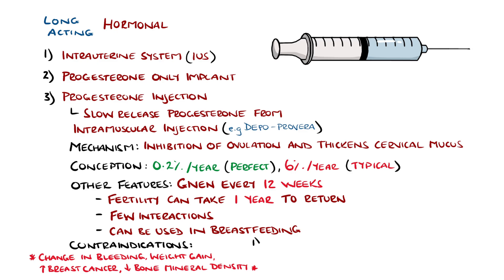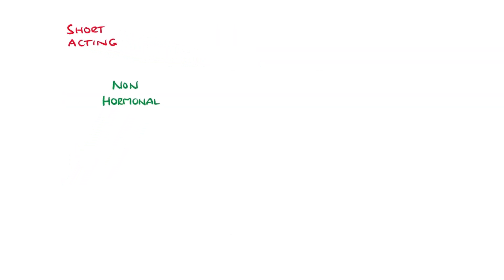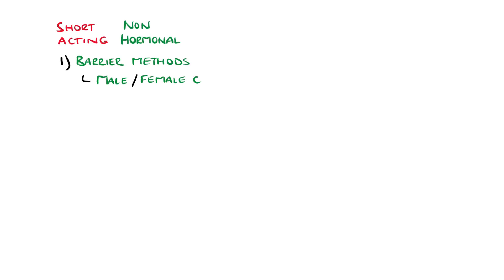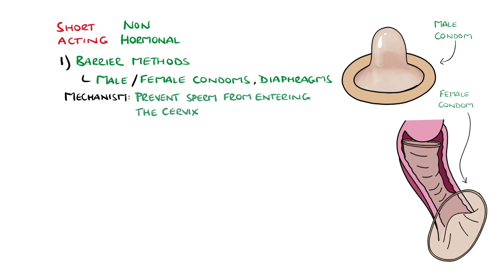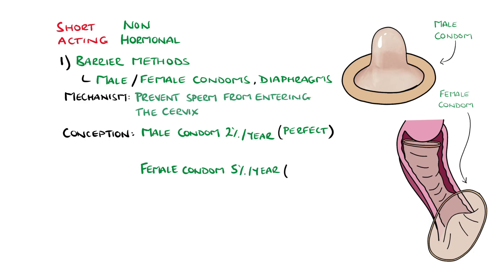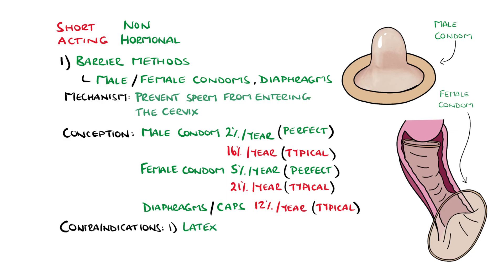The main contraindications for the progesterone injection are breast cancer, severe arterial disease or risk factors, pregnancy, and those who wish to be fertile in the near future. Looking at short-acting non-hormonal options, we have barrier methods such as male and female condoms, diaphragms and cervical caps, which work by preventing sperm from entering the cervix and thus preventing fertilisation. The main disadvantages include that perfect use is rarely achieved, giving a 2% and 5% conception rate for male and female condoms, whereas typical use gives 16% and 21% respectively. Diaphragms or caps can feature a typical conception rate of 12% per year. Advantages include the lack of contraindications — one exception being a latex allergy — and they have been shown to reduce STI transmission, such as chlamydia and gonorrhea, being the only contraceptive method to do so.